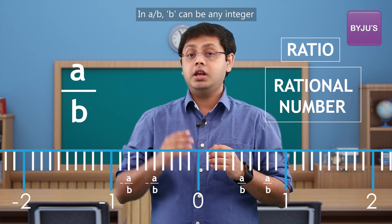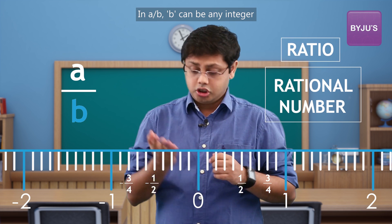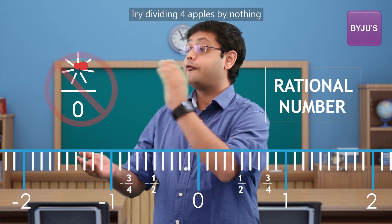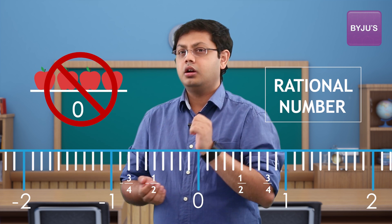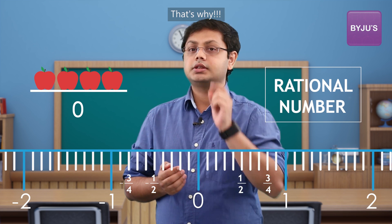In a by b, b can be any integer except zero. Why so? Try dividing four ourselves by nothing. Absurd, right? That's why.